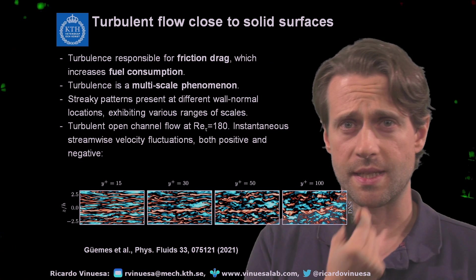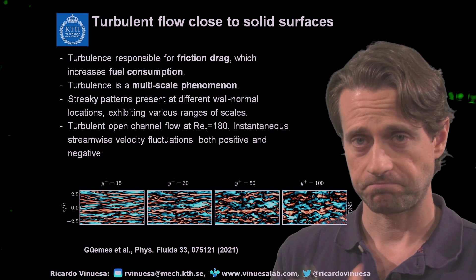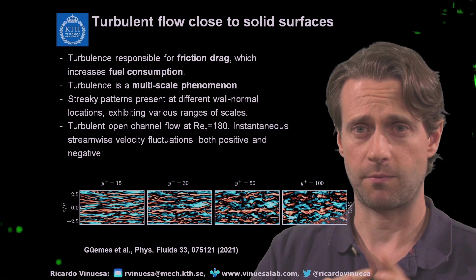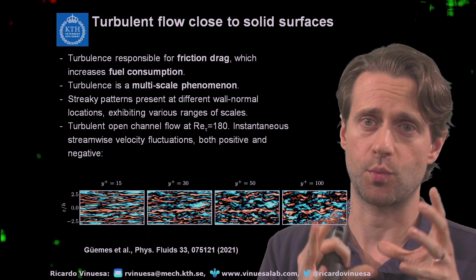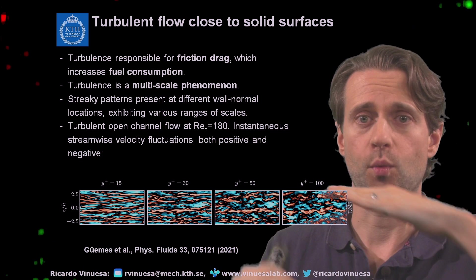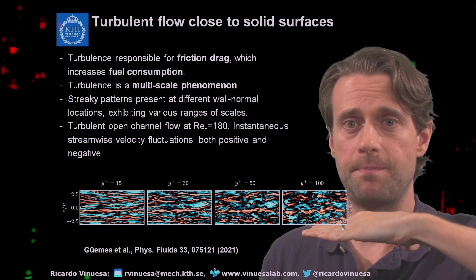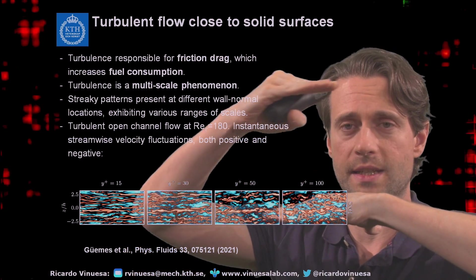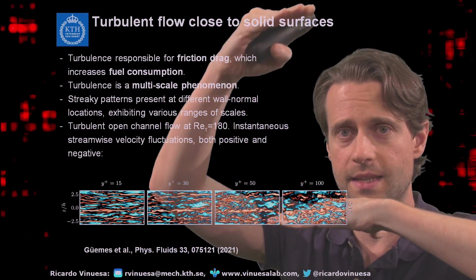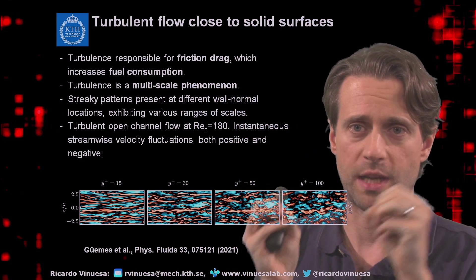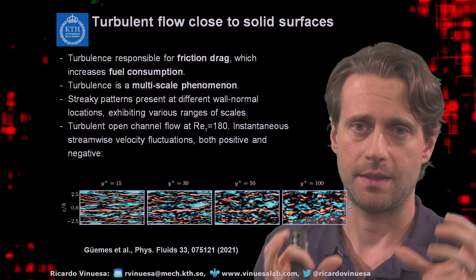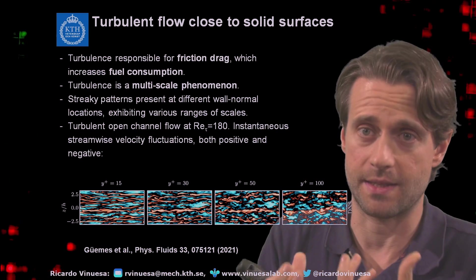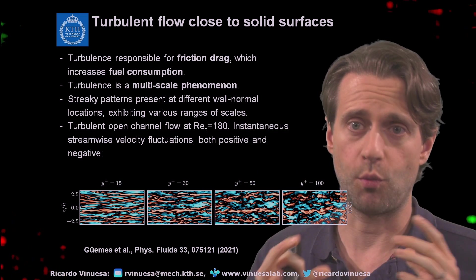Now let's talk more about turbulence and, in particular, what happens with the wall. When we talked before about isotropic turbulence, we said that the fluctuations and the sizes of the structures were the same everywhere. The wall is basically segregating the flow — so each wall-normal location has its own cascade, each wall-normal location has its own production and dissipation.